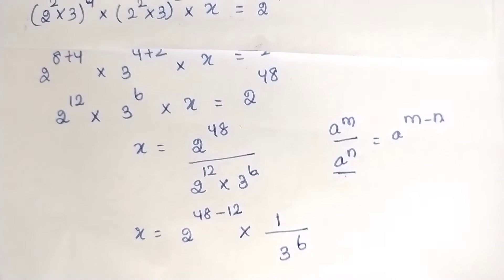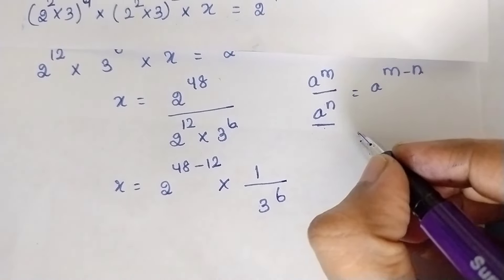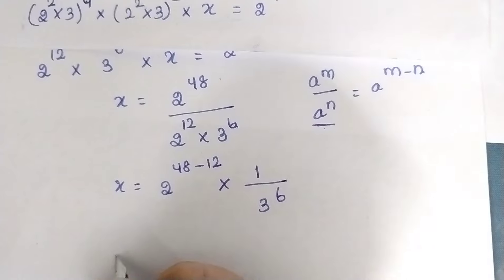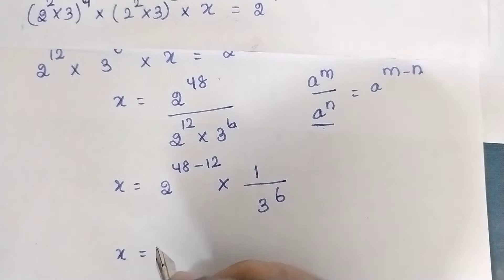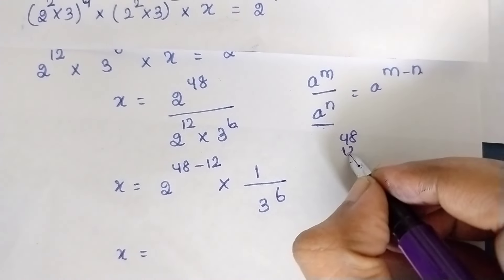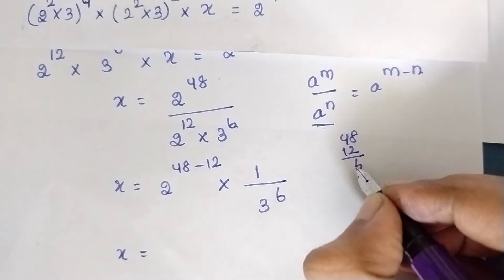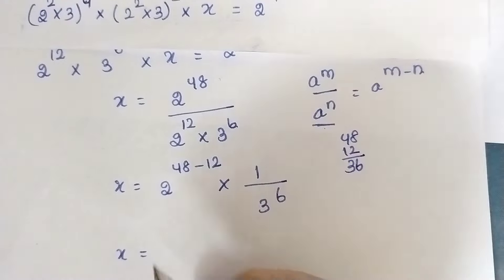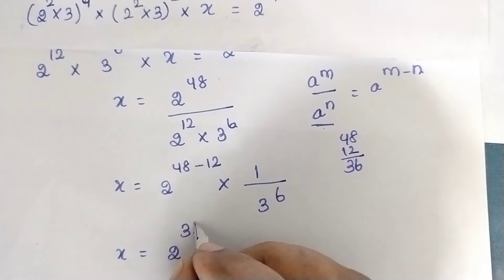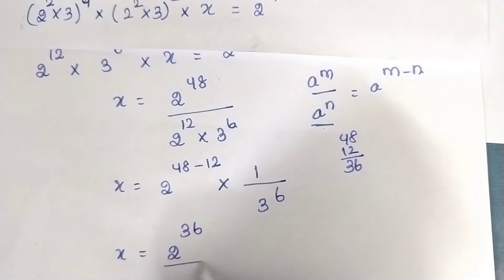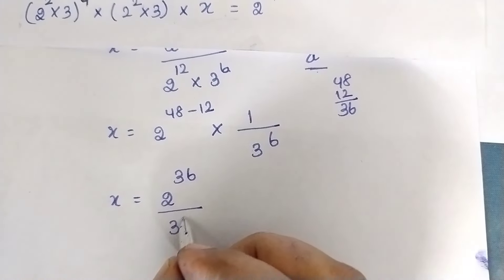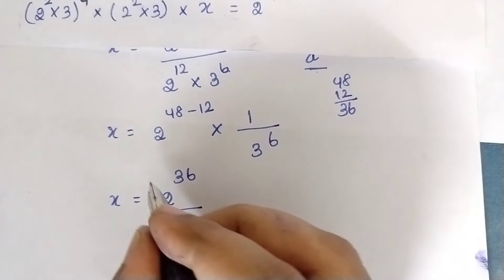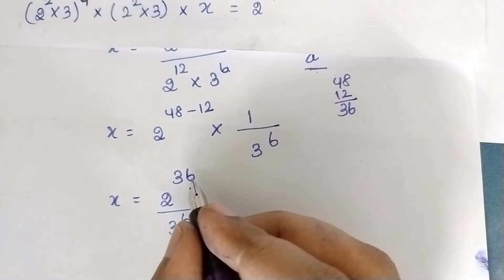So 48 minus 12 equals 36. Therefore x equals 2^36 divided by 3^6. This is the x value. But in the question, they also ask us to find the square root of x to the power 1/3.